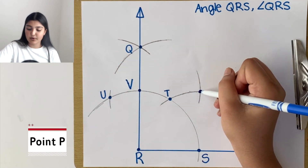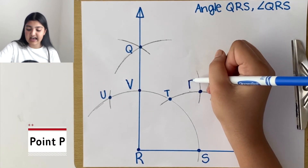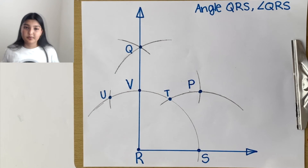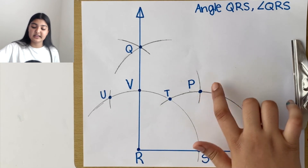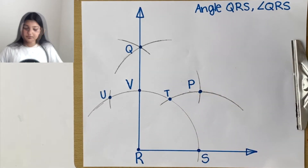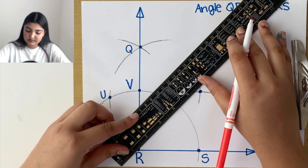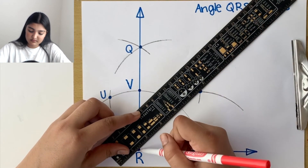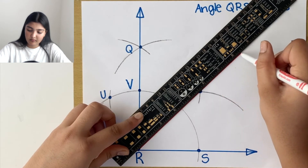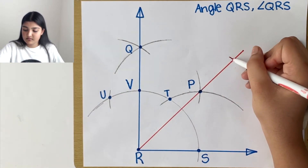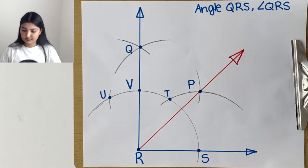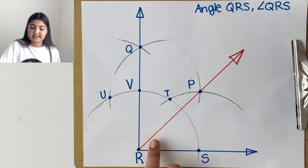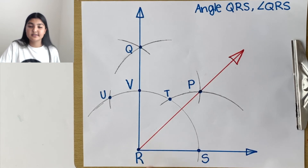This gives us another point, which we label as P. Finally, to bisect our angle, make a ray from R to P that extends. We have now bisected this 90 degree right angle.